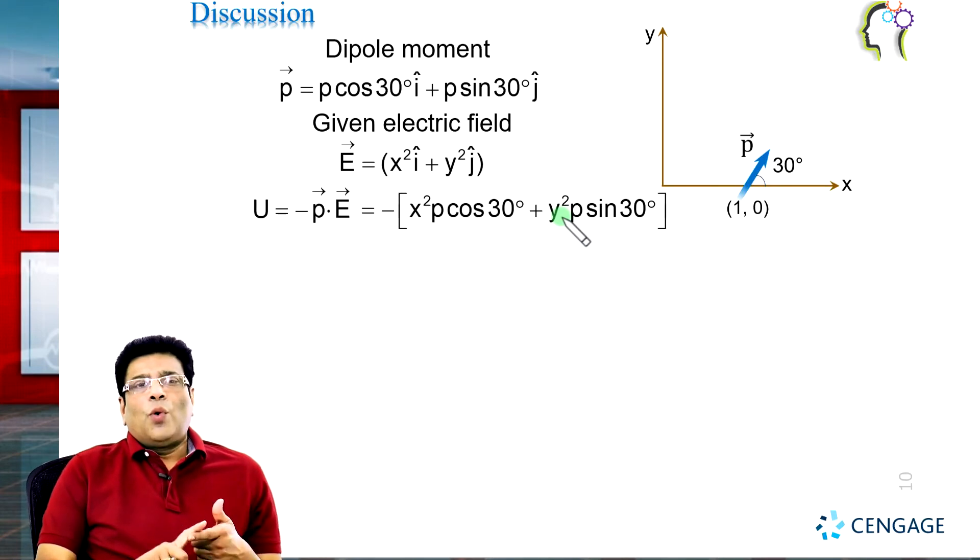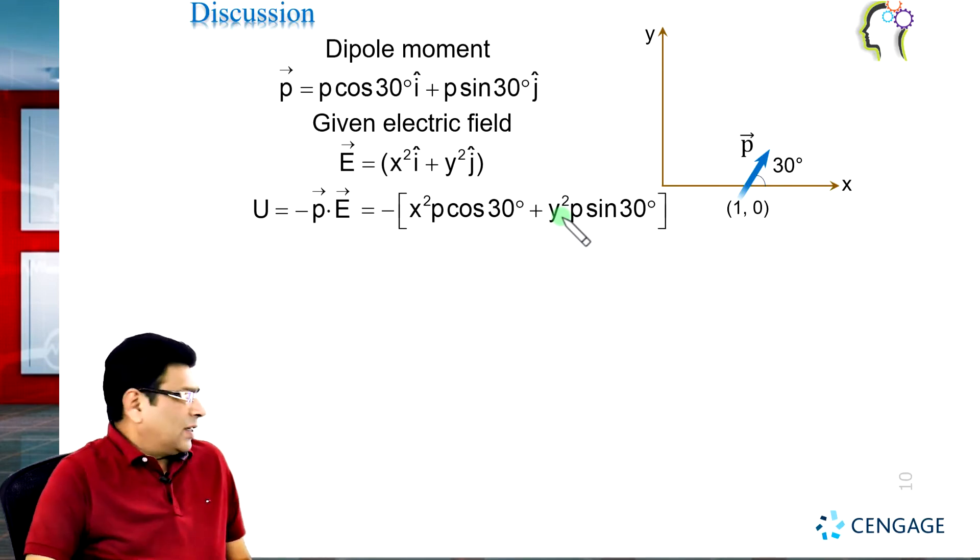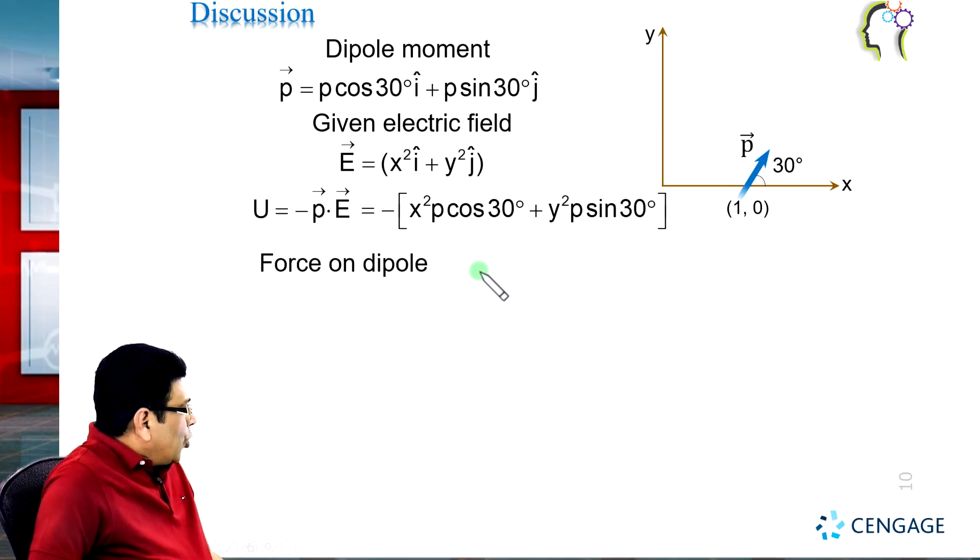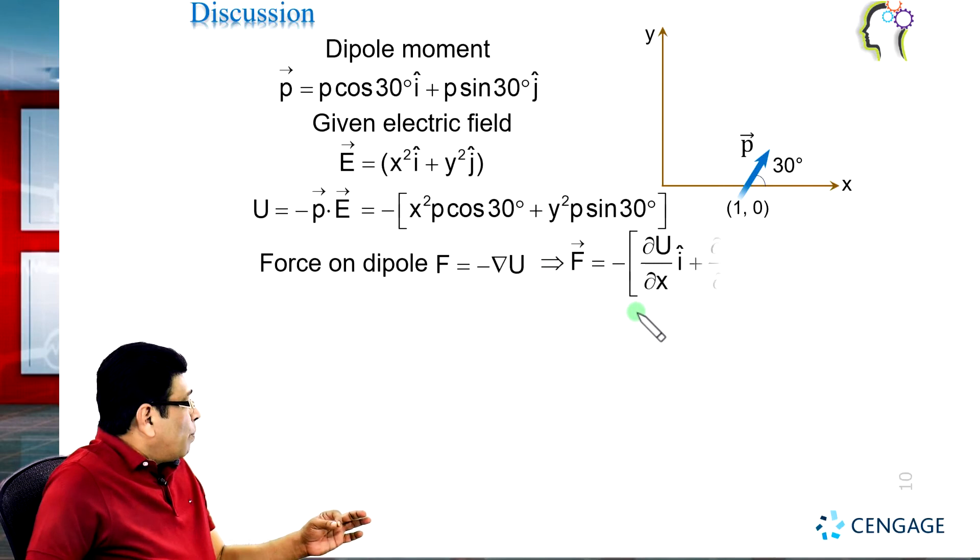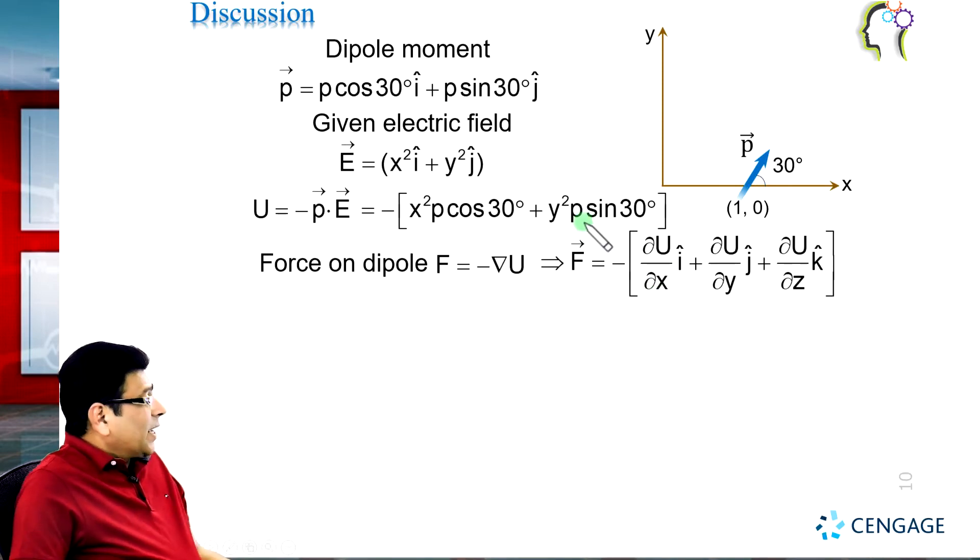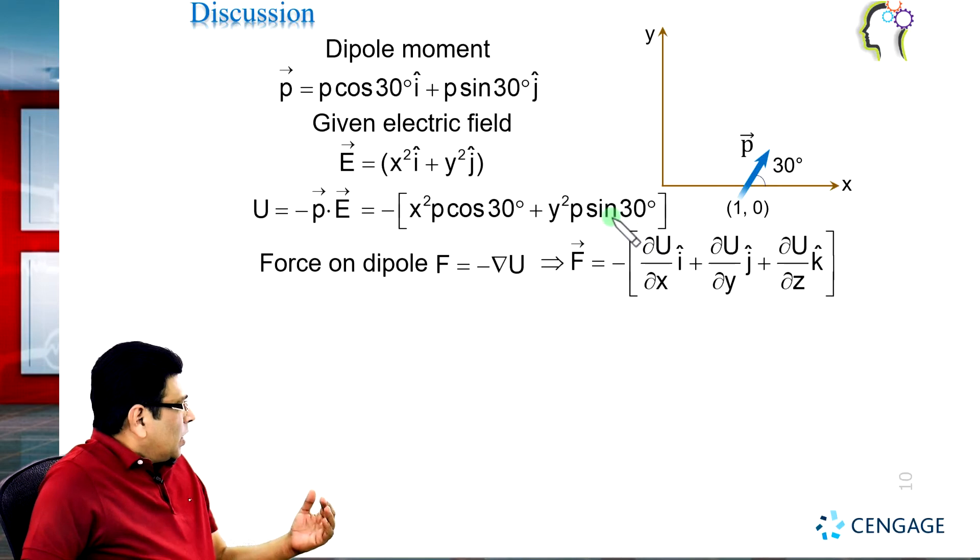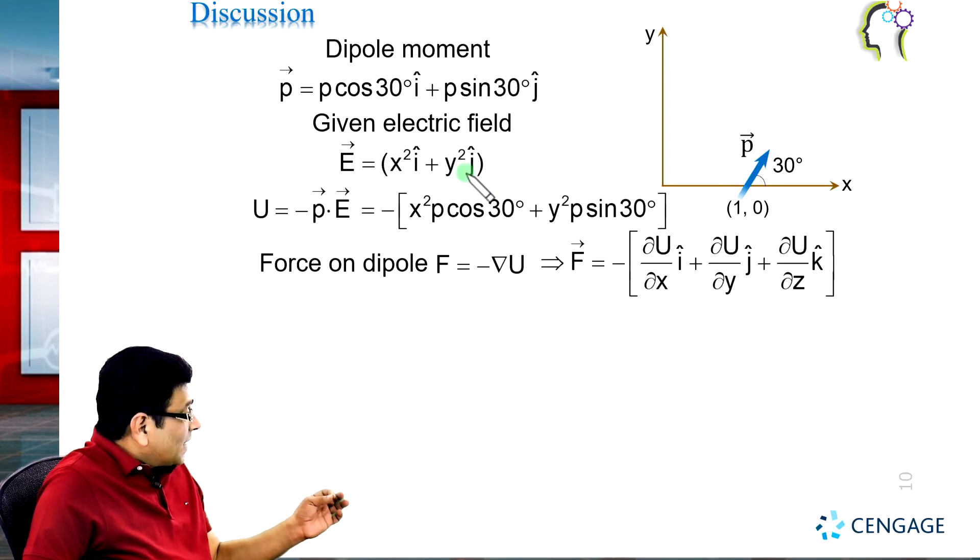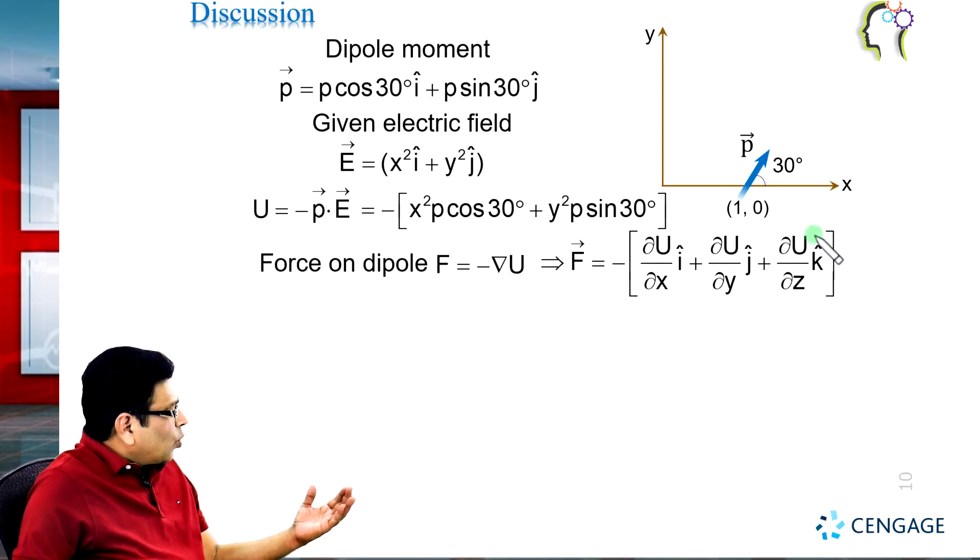Now come to the force. Force on the dipole is equal to the negative gradient of the potential energy. The negative gradient of the potential energy is the partial derivative of the potential energy. We can write F equals minus del U by del x i cap plus del U by del y j cap.